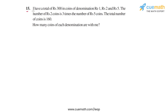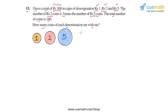In question 15, the problem statement says that I have a total of rupees 300 in coins of denomination rupees 1, rupees 2, and rupees 5. The total value of these coins is rupees 300. To help visualize the information better, I have drawn a figure representing the three kinds of coins: rupees 1, rupees 2, and rupees 5.